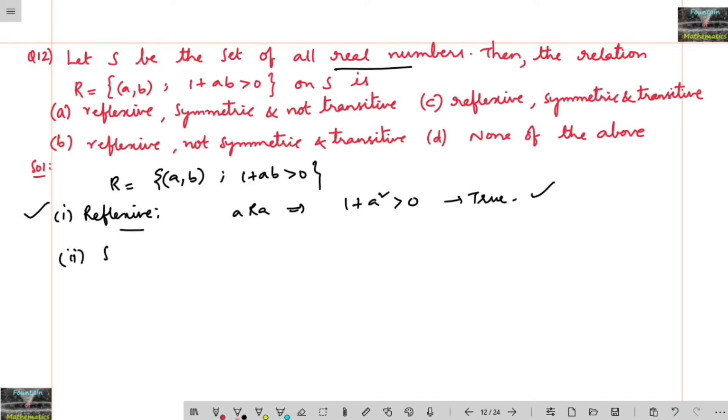And coming to the symmetric, a is related to b implies 1 plus ab is greater than 0, which also can be written 1 plus ba is greater than 0.